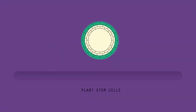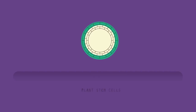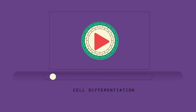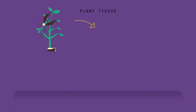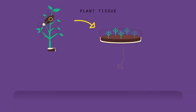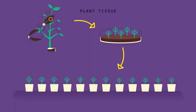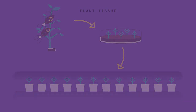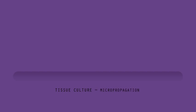This method works because the shoots of the plant contain stem cells, which are able to differentiate to form different cells and tissues. However, you might want to produce hundreds of plants from only a small piece of plant tissue. To do this, another method called tissue culture, also known as micro-propagation, is used.